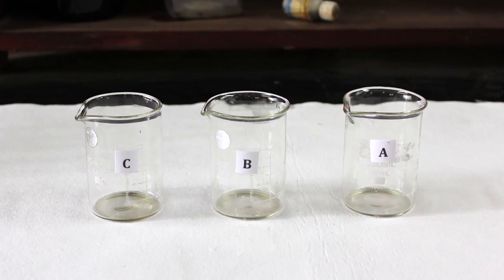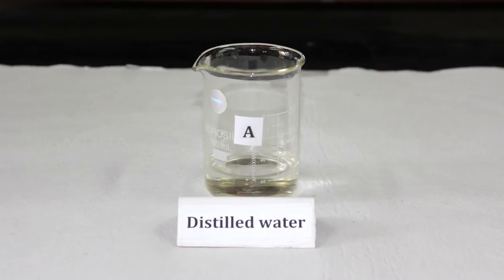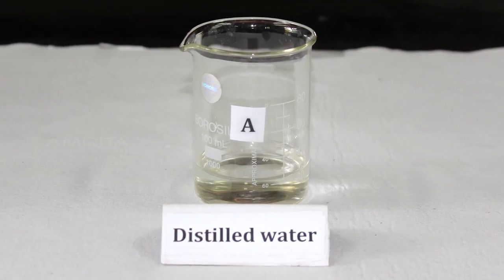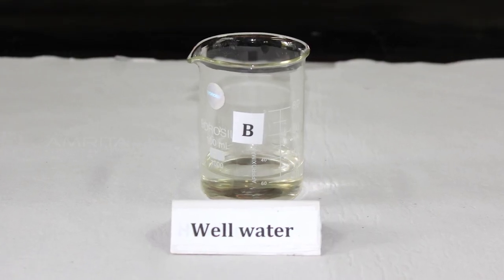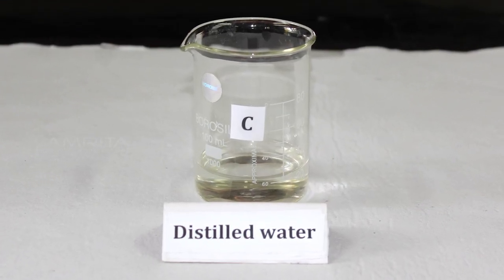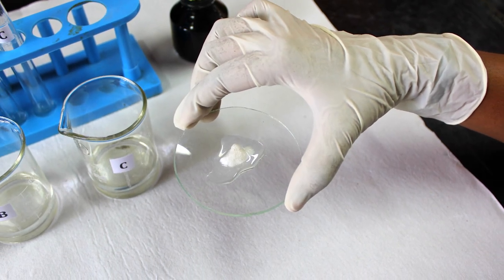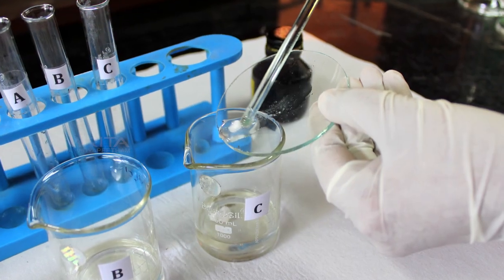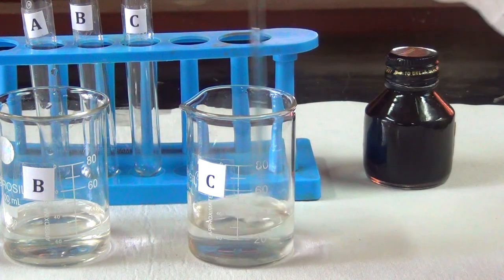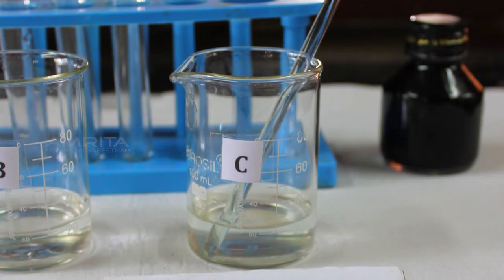Procedure: Take three beakers labelled A, B and C. Take 20 ml of distilled water in beaker A, 20 ml of well water in beaker B and 20 ml of distilled water in beaker C. Add 2 grams of calcium chloride into beaker C containing distilled water. Stir the contents of beaker with a glass rod until calcium chloride dissolves completely.